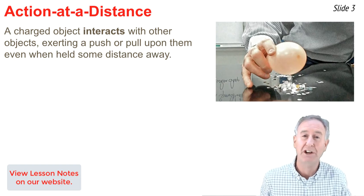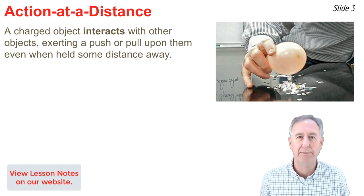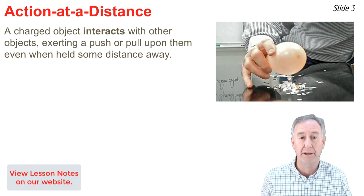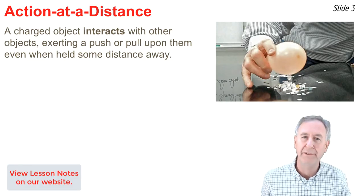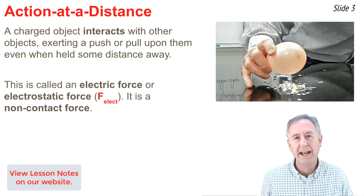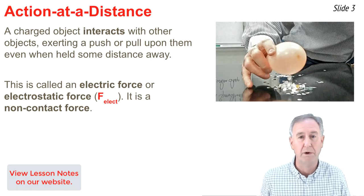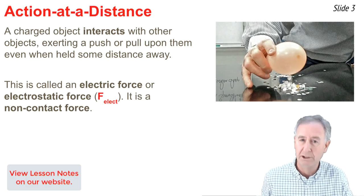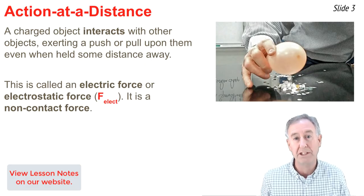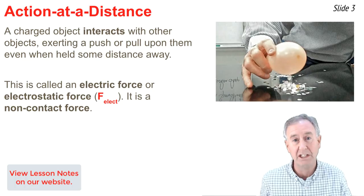The balloon is like any charged object. It interacts with other objects to exert a push or pull upon them, even when held a distance away. This action at a distance is referred to as an electrical force, or an electrostatic force, denoted by the symbol F-ELECT.